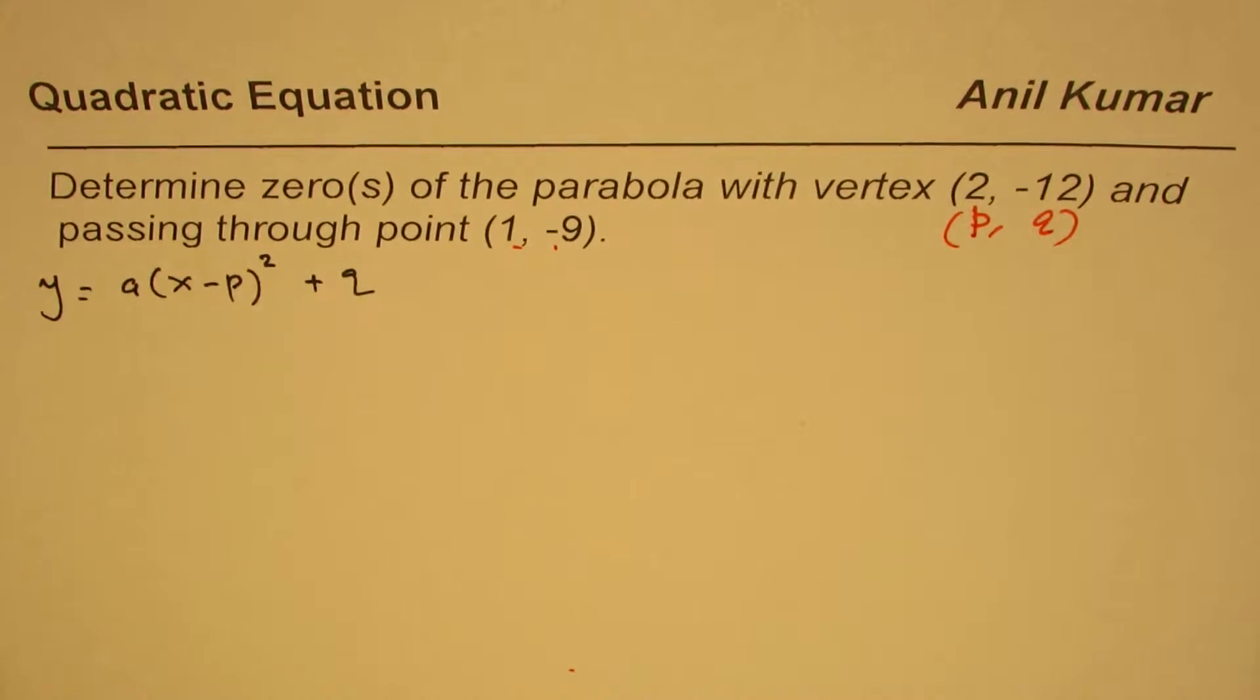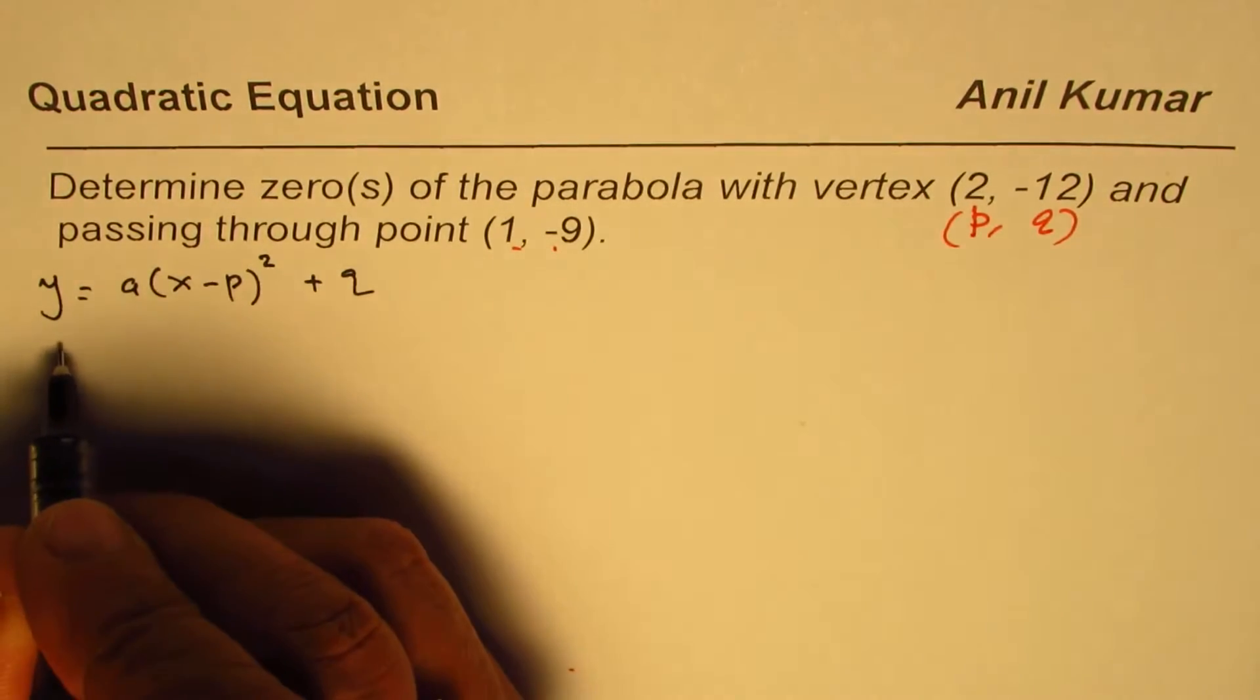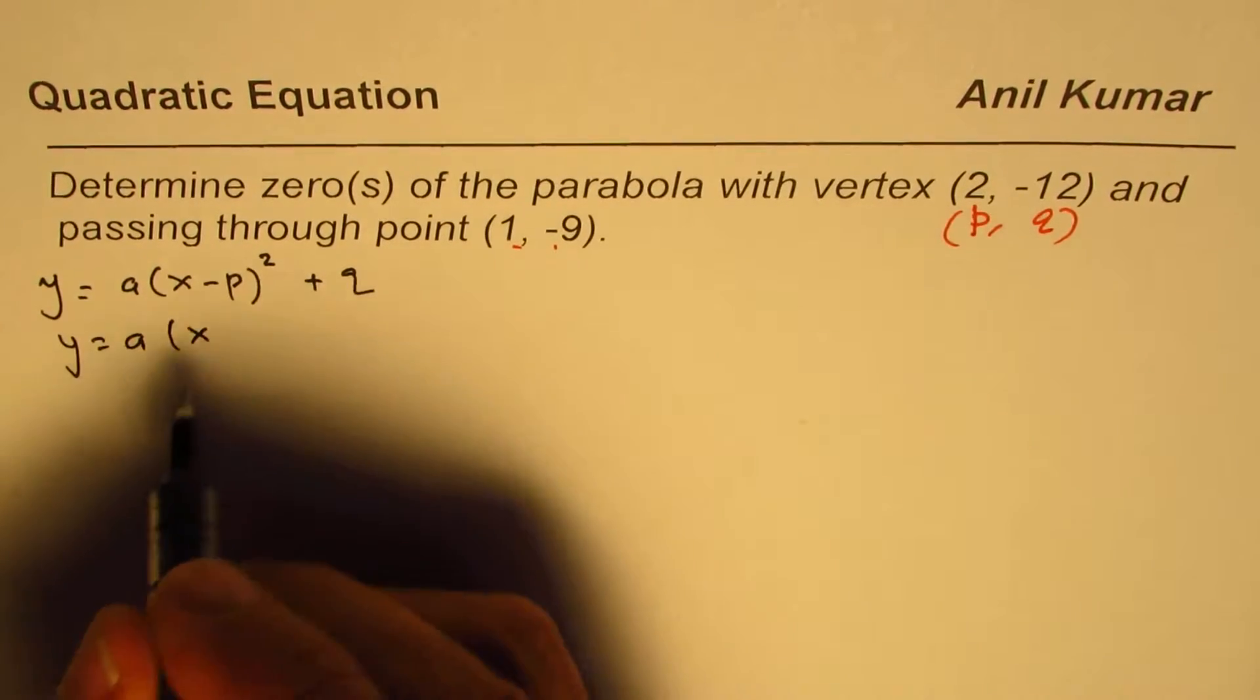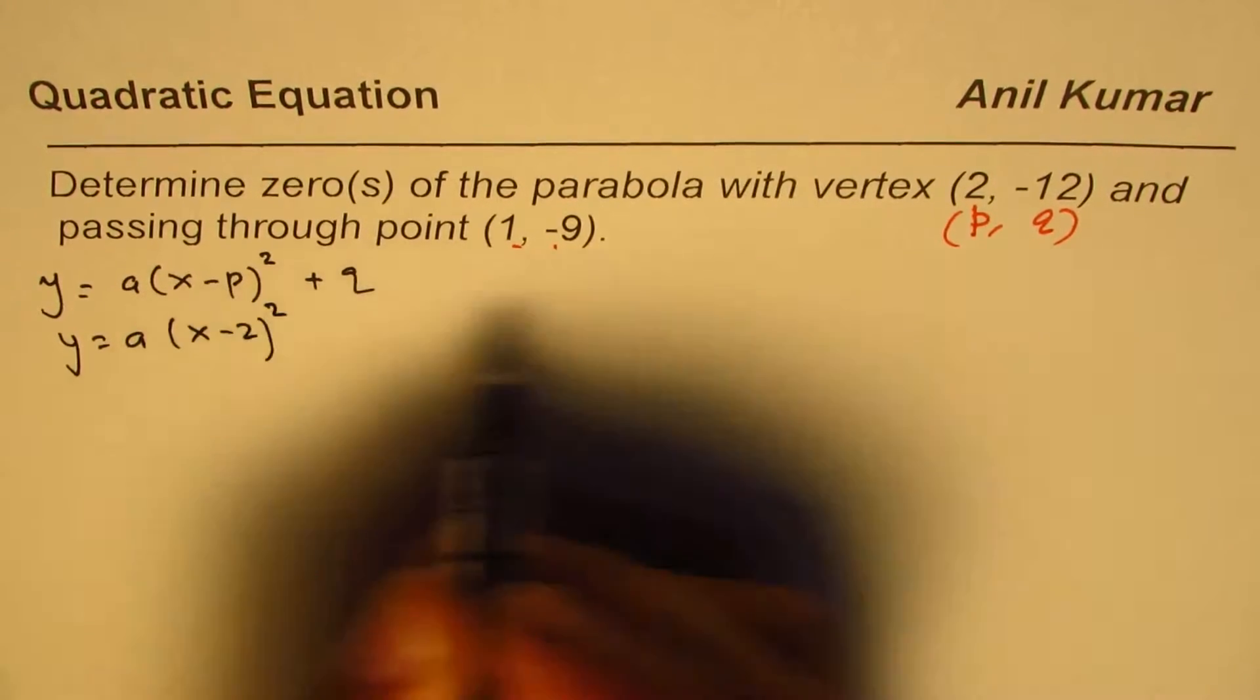That should help us find the equation. First, let me use the vertex points p and q. We can rewrite this as y = a(x - 2)² - 12.